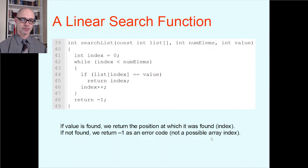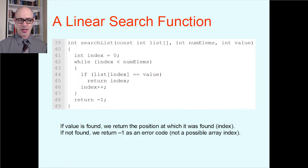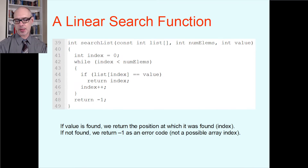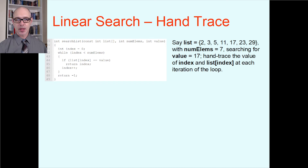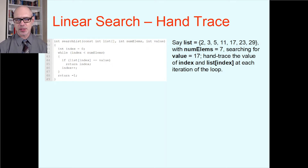We could have rewritten this as a for loop — an index starting at zero, continuing while less than numElements, incrementing at the end — which would save a couple lines of code. But all the other algorithms in chapter 8 are written with while loops, so keeping it consistent lets us compare to algorithms that come later. For the hand trace exercise, let's say we have an array called list storing values 2, 3, 5, 11, 17, 23, and 29 — seven elements total. We pass in seven for the number of elements, and let's say we're searching for the value 17.